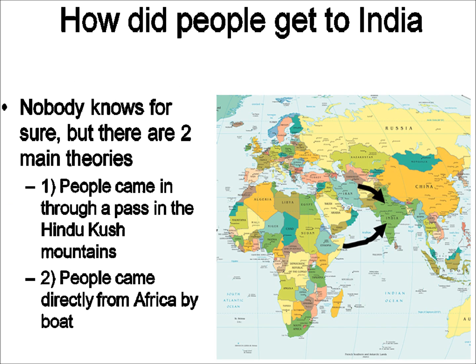We can't be sure how the first people got to India. The two biggest theories are either overland through the Hindukush Mountains, because they are lower than the Himalayas and wouldn't require oxygen tanks to climb, or possibly from East Africa via ships by boat. To this day, we have no idea which one. Either of these are a viable possibility.